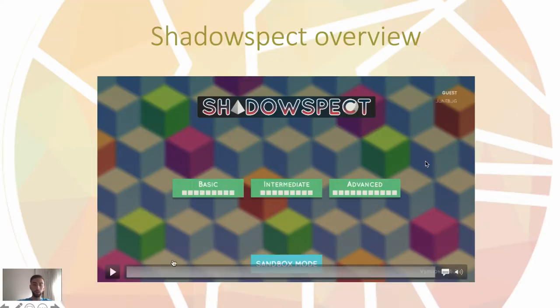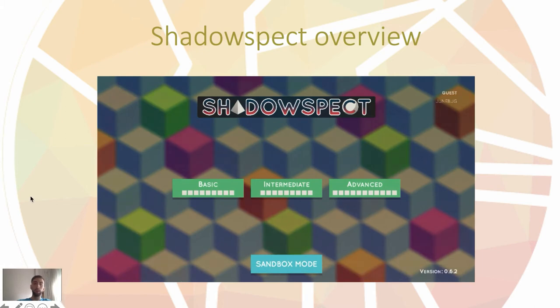Now we're going to see a short video about Shadowspect. We have three types of levels: basic, intermediate, and advanced. Then we have a sandbox mode where students can create shapes freely.